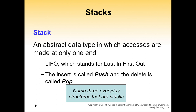The first abstract data type is called a stack. A stack is an abstract data type in which accesses of data are made at only one end, making it behave in a LIFO manner. LIFO stands for Last In, First Out — the last piece of data that went into the stack is the first one to come out. The insert behavior is called a push, and the delete of any data from a stack is called a pop.